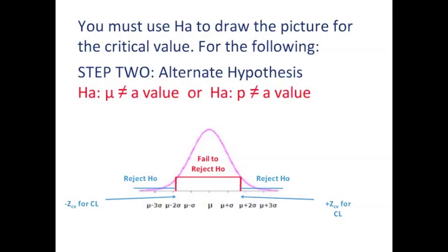If we take a sample and our z score that we're going to test in step four falls in that fail to reject region, then we're not going to reject H0, and we're going to assume that H0 is true.